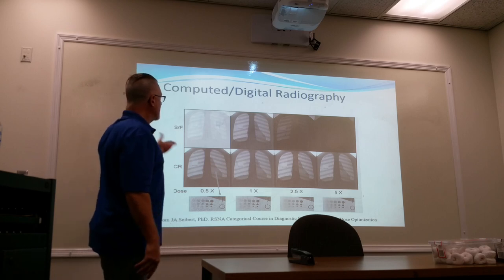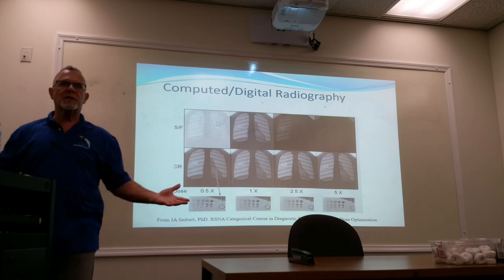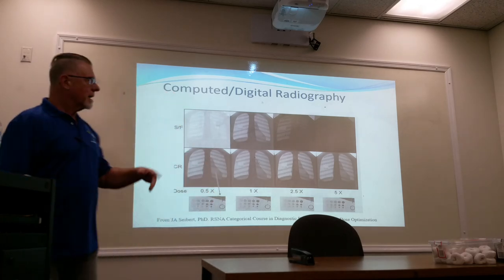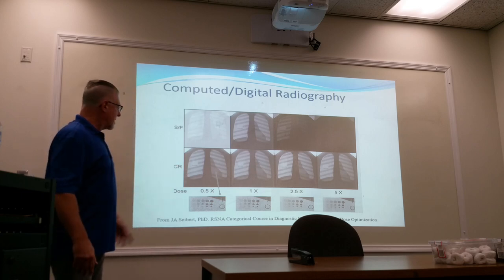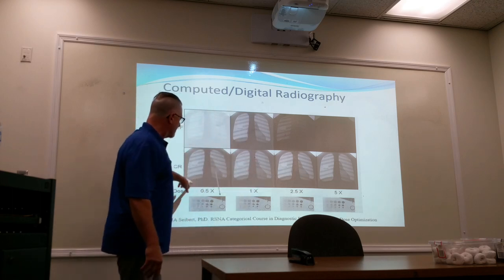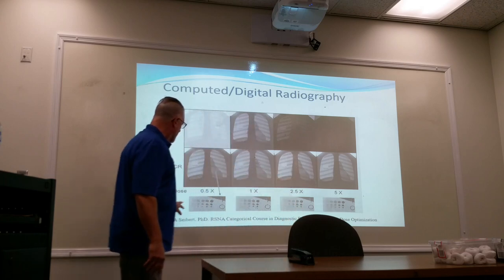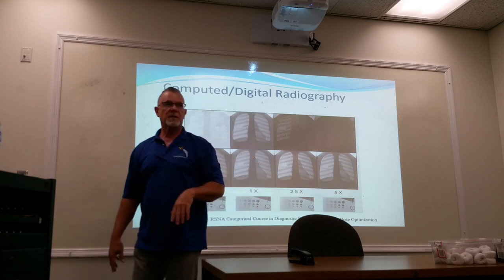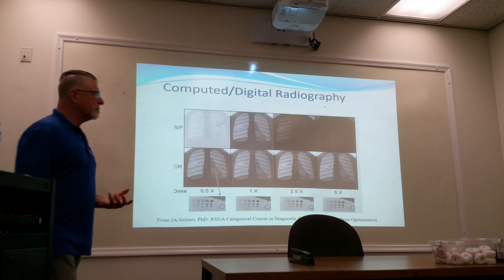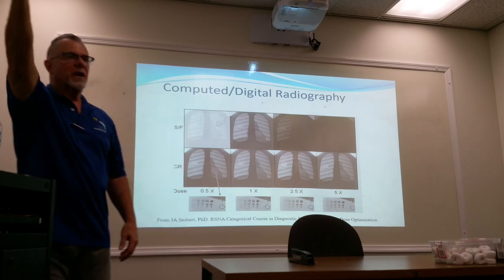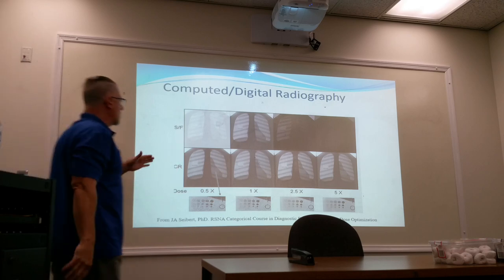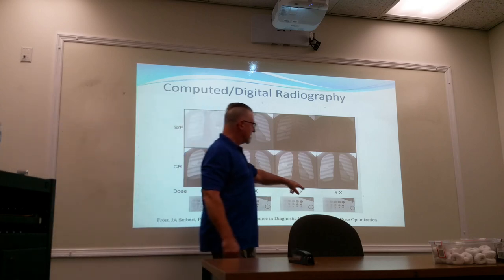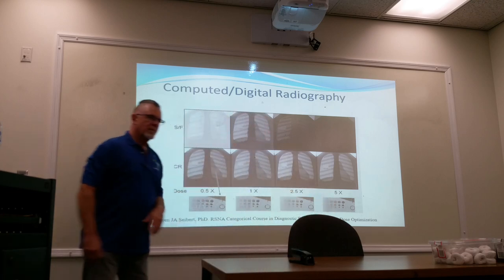With screen-film, if you overexpose the patient it's easier to see; underexposed is too light, overexposed is black. In digital they all look almost the same. Take your standard dose, then use half, two-and-a-half times, five times — what changes is your ability to resolve low contrast resolution. To get that extra detail you're paying a price of five times the dose. That's why in a QA program it's so important to look at your exposure indicators — EI, S-values, depending on your system — to see what exposure a particular study is receiving.